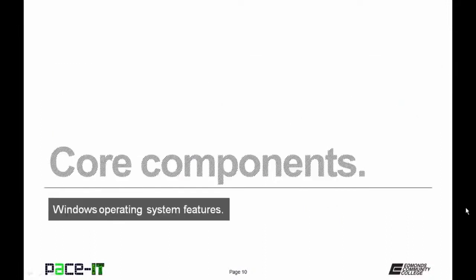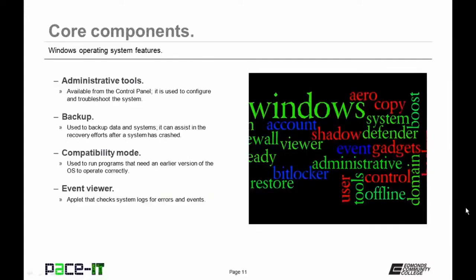Let's move on to some core components of Windows operating systems, beginning with administrative tools. All versions come with administrative tools, located in the Control Panel, which allow you to configure and troubleshoot your system.